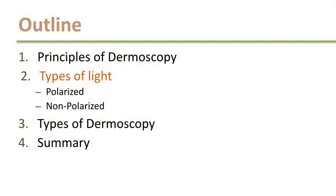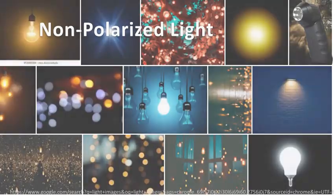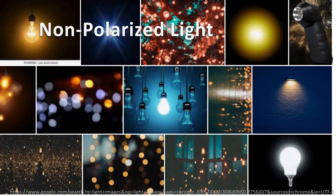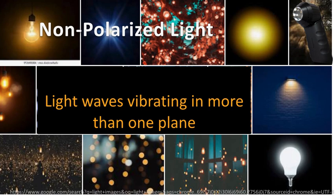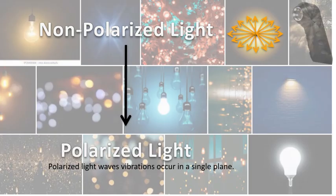Now what are the types of lights that are being used by the dermatoscope? We have polarized and non-polarized lights. Non-polarized light is found everywhere — it is emitted by the sun, by lamps — and it is characterized by light waves that are vibrating in more than one plane: in the horizontal plane, in the vertical plane. This non-polarized light can be transformed into polarized light, which is characterized by light waves that are vibrating in a single plane.